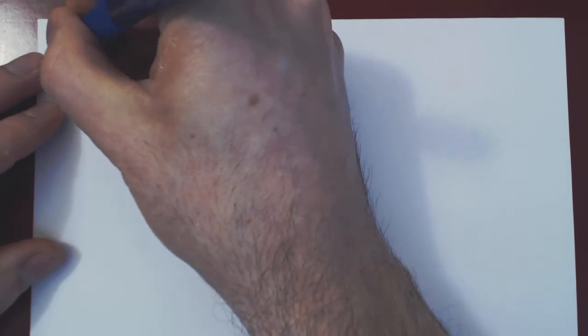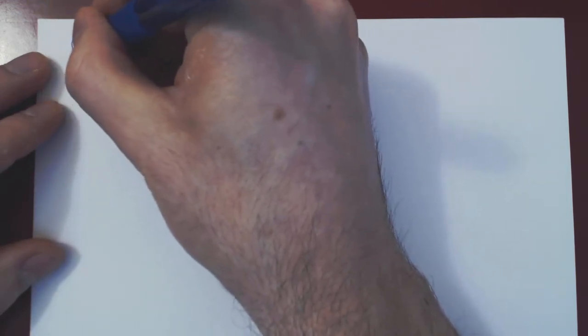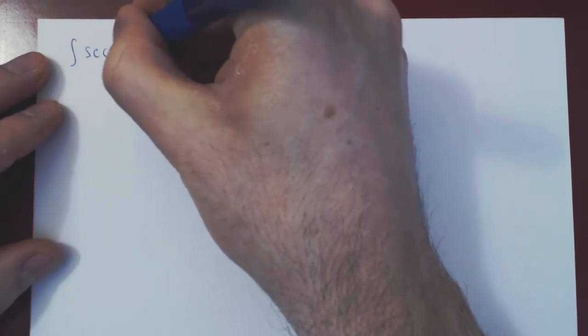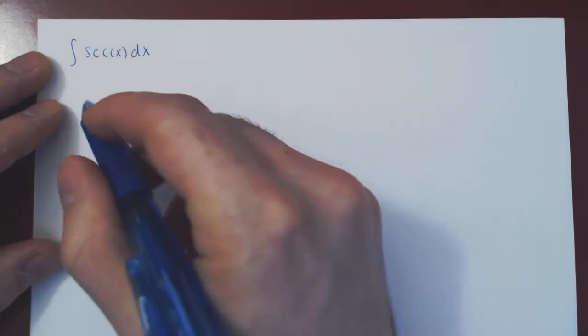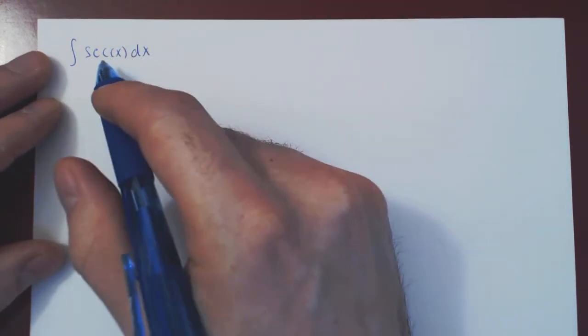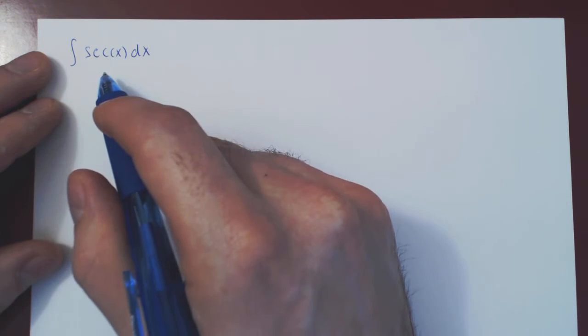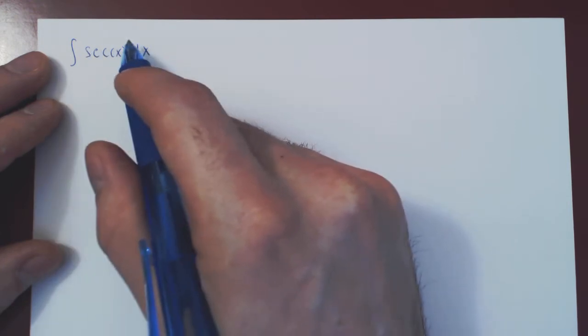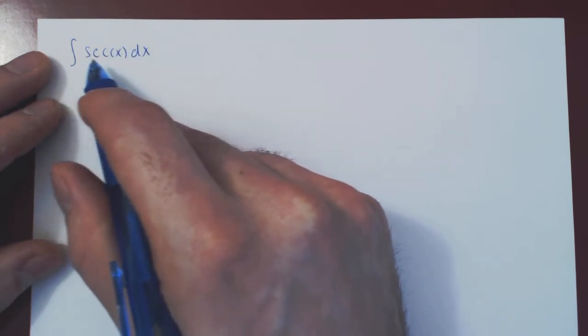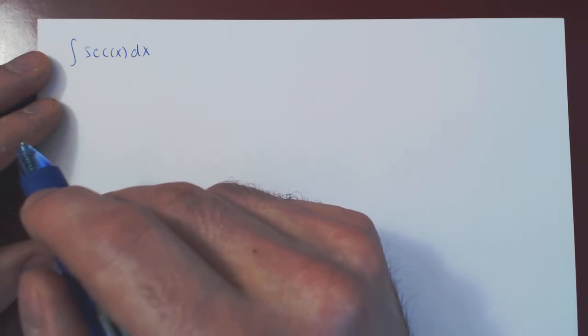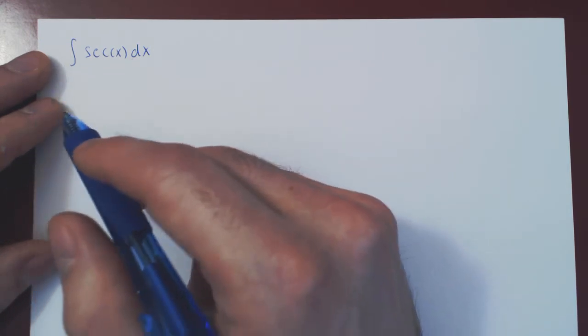So suppose we wanted to derive the integral of secant of x. Well we can't play the same game as we did for tangent, because if you look at secant you get 1 over cosine, and as there's nothing on top, letting u be cosine will not give you a workable u-substitution. So as this stands, this will really go nowhere.